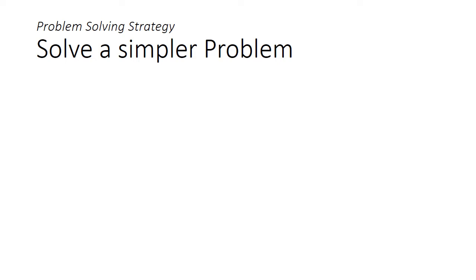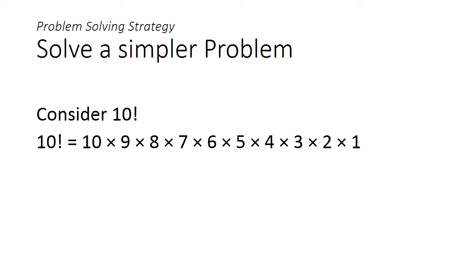So one strategy that we can employ to solve this problem is to first look at an easier case of this problem. Let's look at 10 factorial: 10 multiplied by 9 by 8 all the way to 1.